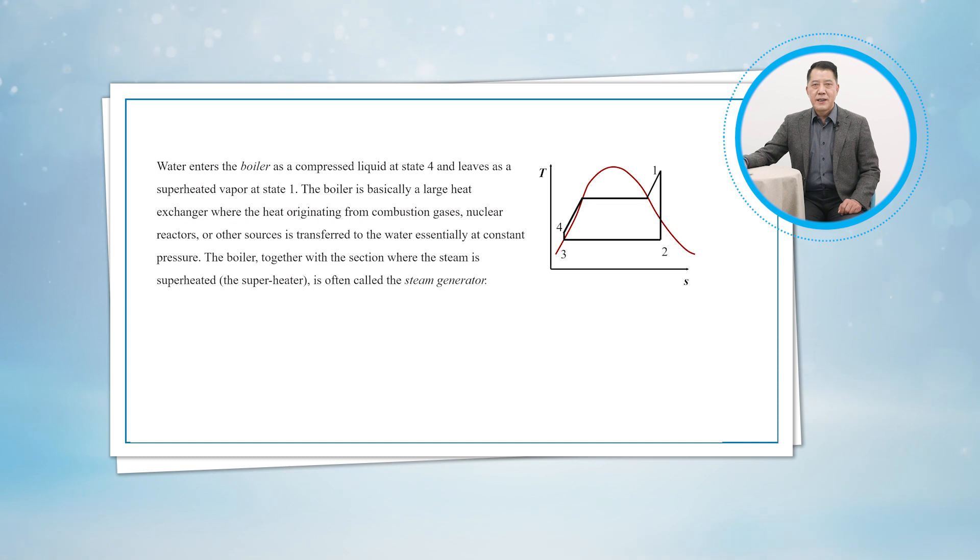Water enters the boiler as a compressed liquid at state 4 and leaves as a superheated vapor at state 1. The boiler is basically a large heat exchanger where the heat originated from combustion gases, nuclear reactors, or other sources is transferred to the water essentially at constant pressure. The boiler together with the section where the steam is superheated is often called the steam generator.